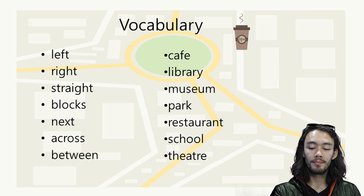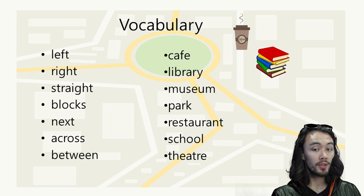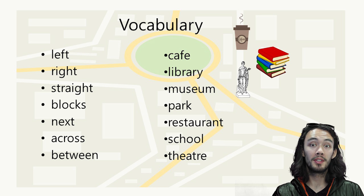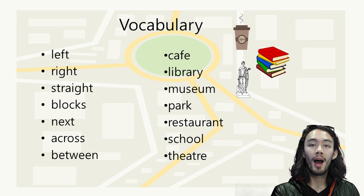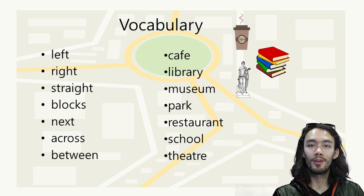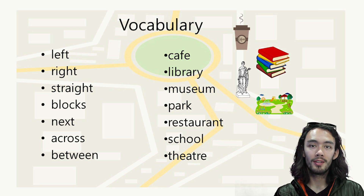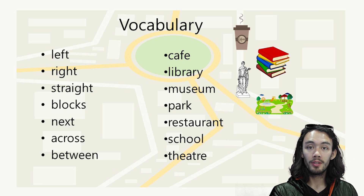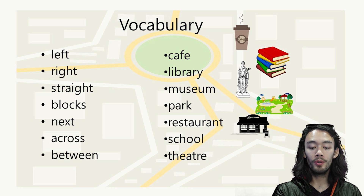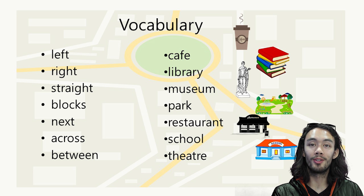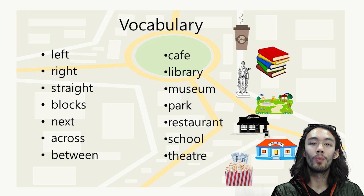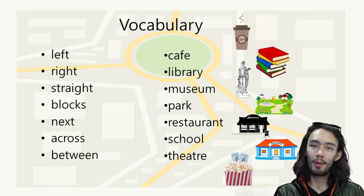Library, where we can get books. Museum, where we can see lots of statues or ornaments from history. The park, so there's lots of grass and trees and places to go. Restaurant, we go there for food. School, we go there to learn. And the theatre, we go to watch movies and eat popcorn.